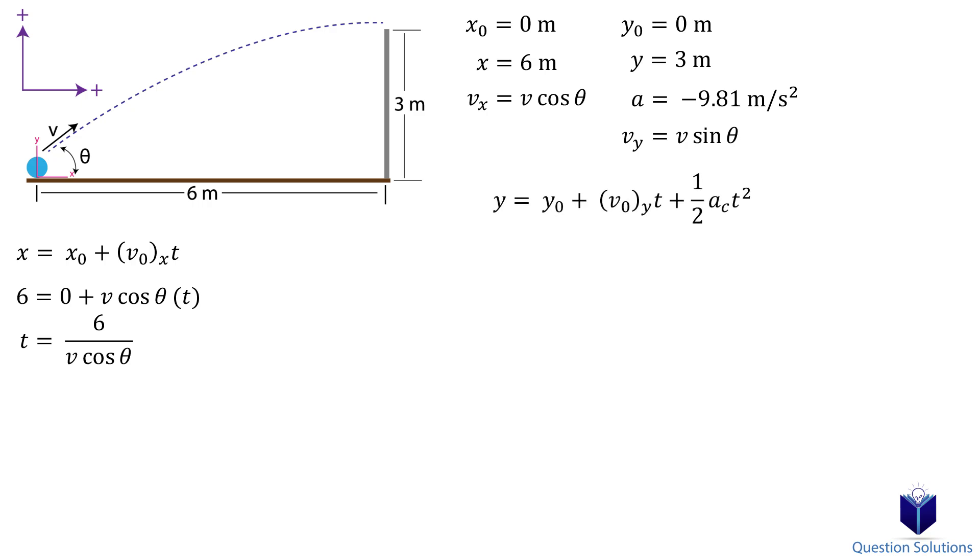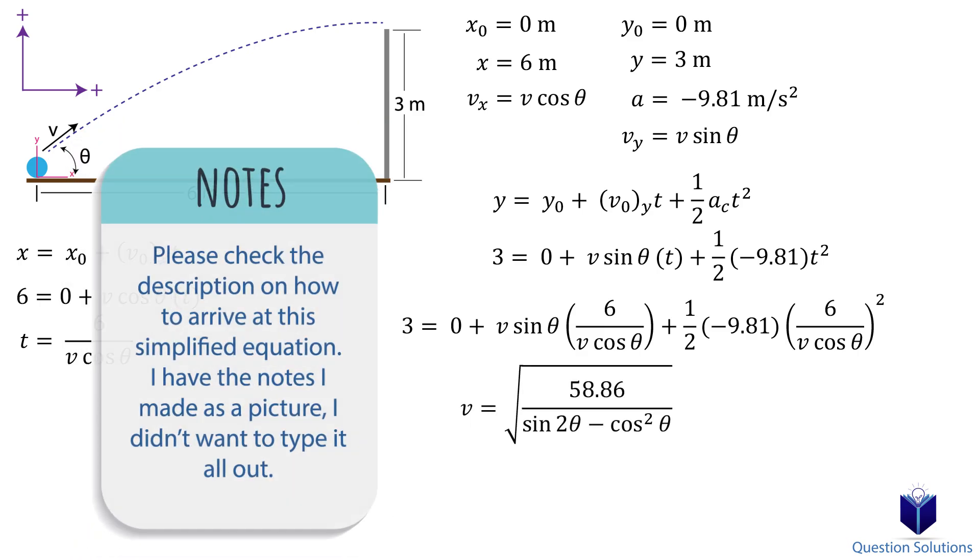For that, we will use this equation. As before, let's substitute what we know in. Now, let's substitute equation 1 into equation 2 by writing t with equation 1. Simplifying gives us an equation isolated for v.